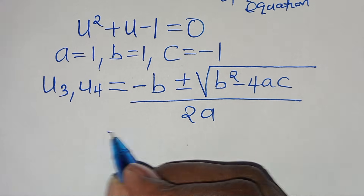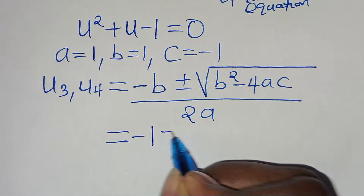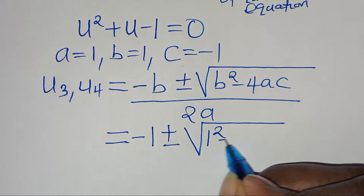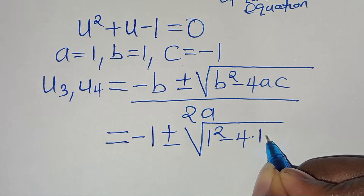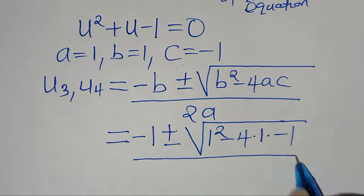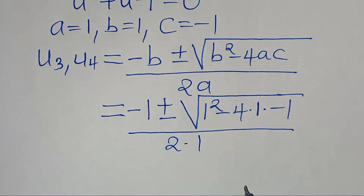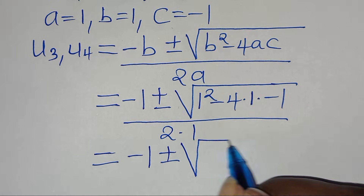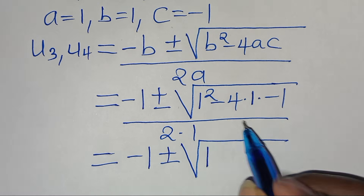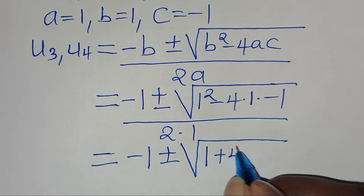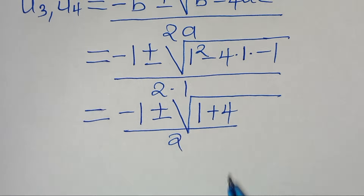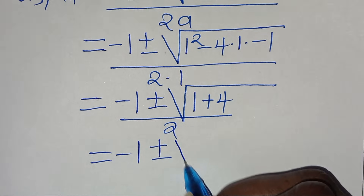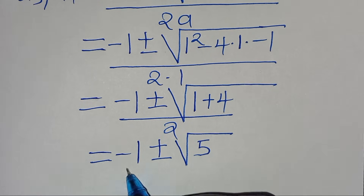Substituting into the quadratic formula, we have minus 1 plus or minus the square root of (1 squared minus 4 times 1 times minus 1), divided by 2 times 1. This gives us minus 1 plus or minus the square root of (1 plus 4), divided by 2, which is minus 1 plus or minus the square root of 5, divided by 2.